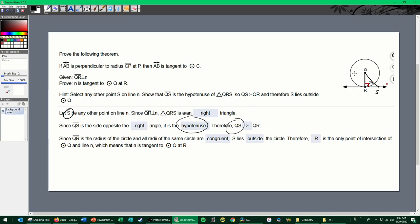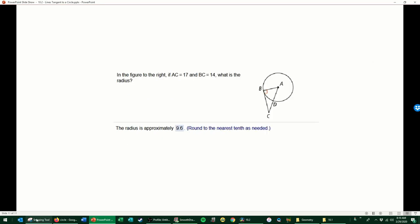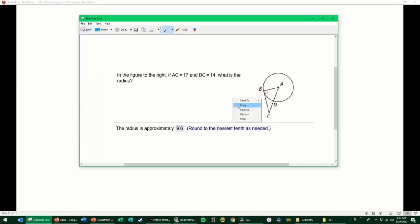Since QR is the radius of the circle and all radii of the same circle are congruent, we know that. We've been saying it since topic 9. S lies outside of the circle, right? Because point R is the only point on the line and on the circle. That means S must be outside of the circle because it can't be inside if R is the only point that touches the circle. It's a lot of reading on this one, and that's why I've been warning you all year. The end of this class is really just a big reading check.